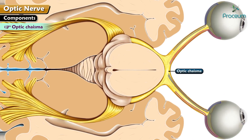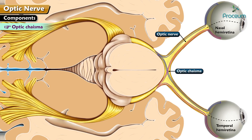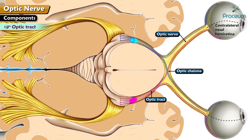At the optic chiasma, fibers of each optic nerve decussate partially to form the optic chiasma. The fibers from the nasal half of the retina cross to the opposite side, but those of the temporal halves do not cross. After decussation, the nerve fibers are called the optic tract. Each optic tract contains fibers from the nasal half of the opposite side, called the contralateral nasal hemiretina, and fibers from the temporal half of the same side, or ipsilateral temporal hemiretina.